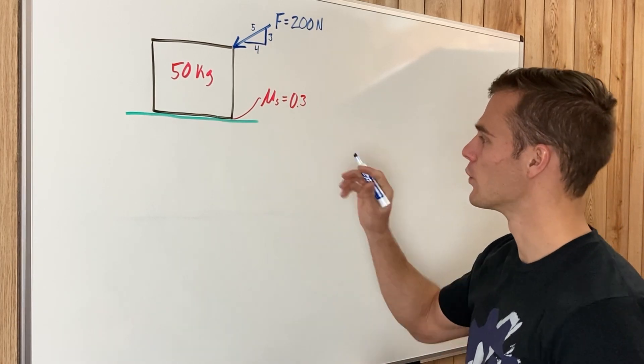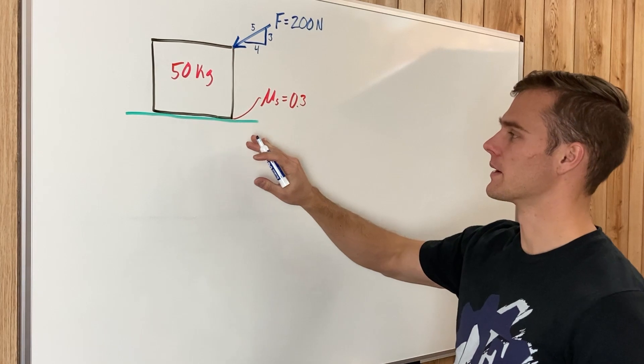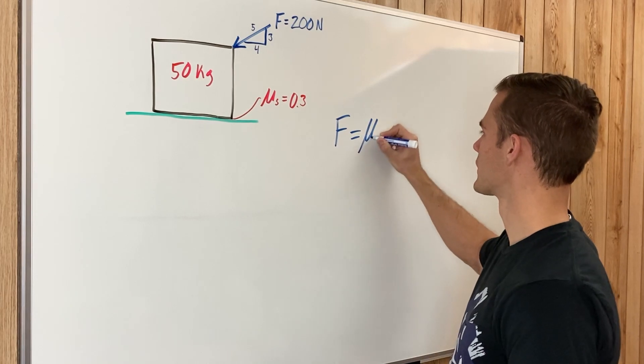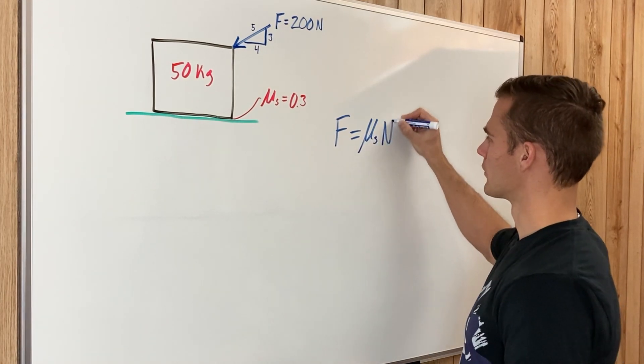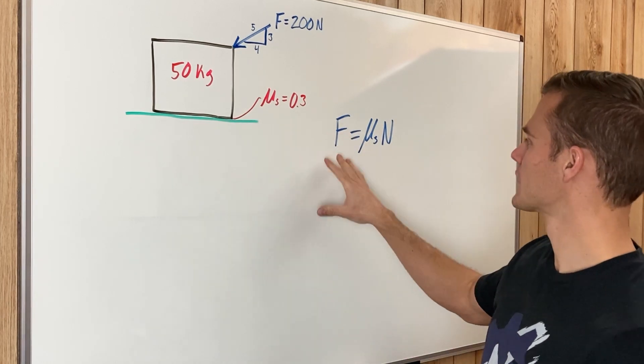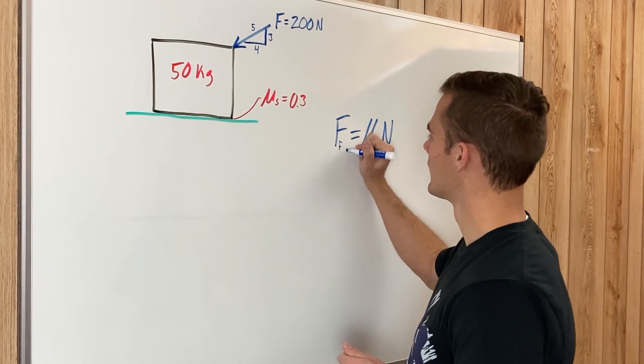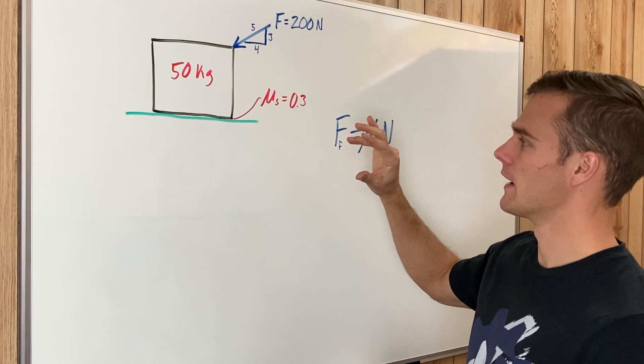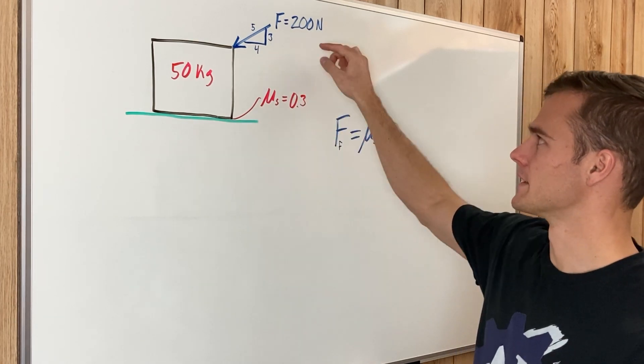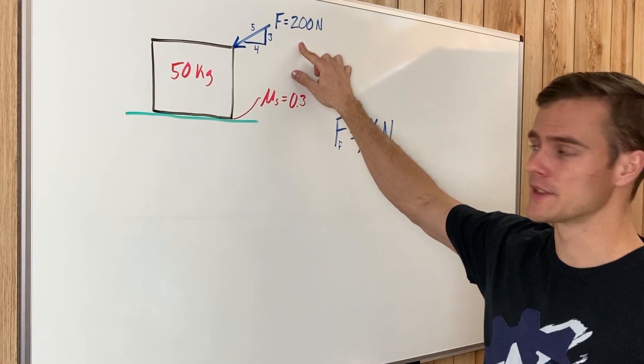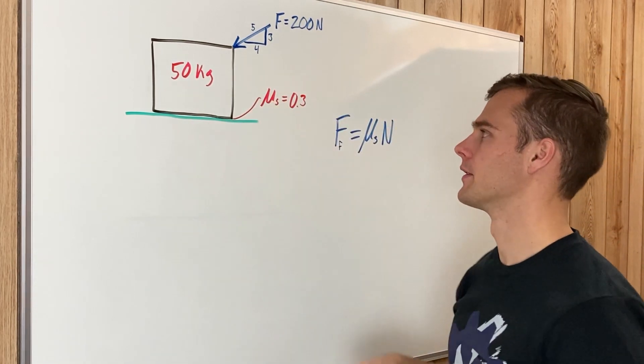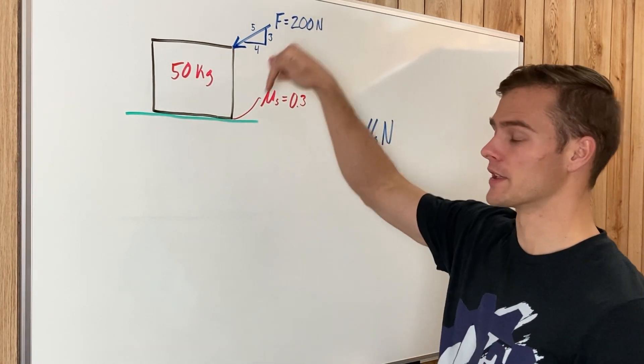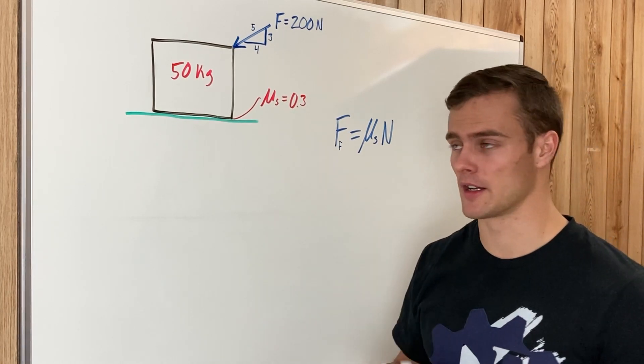We know that the maximum amount of friction that there can be before the box starts to move is the coefficient of static friction multiplied by the normal force. But the friction force isn't necessarily that much—it could be less. If it is less, it's going to be the equal amount of force as the component of the 200 newtons that is pushing parallel to the ground, because the component pushing perpendicular to the ground isn't going to cause movement on this box.